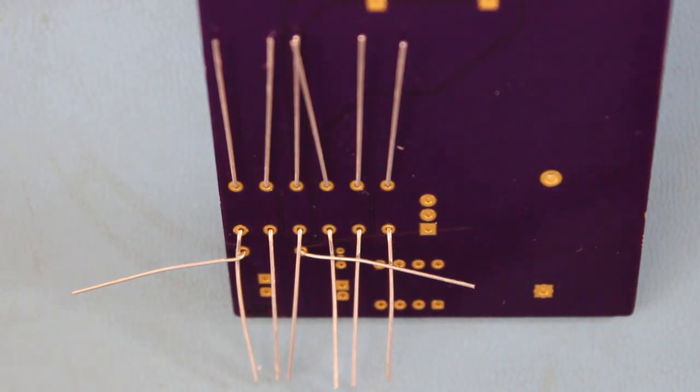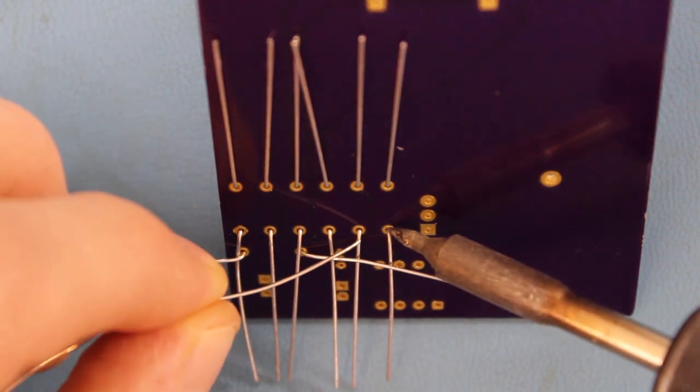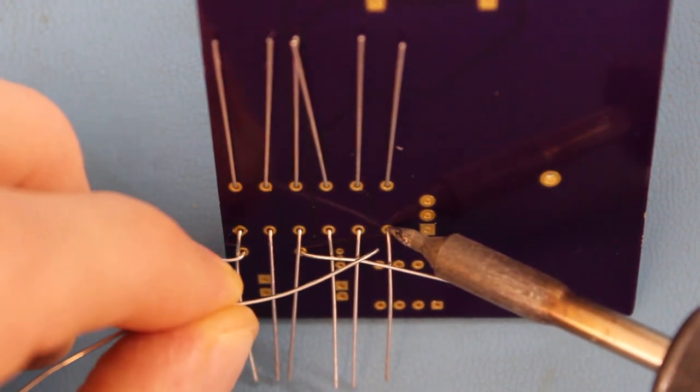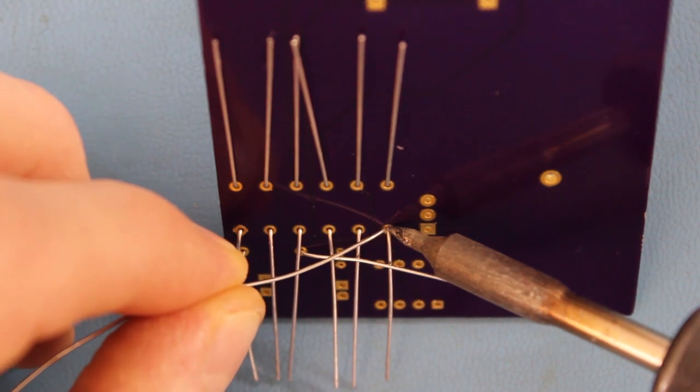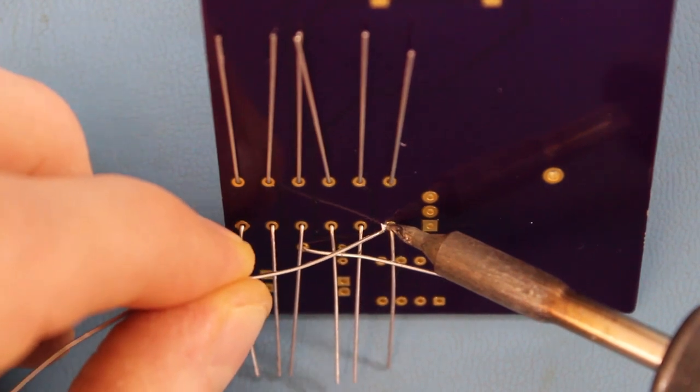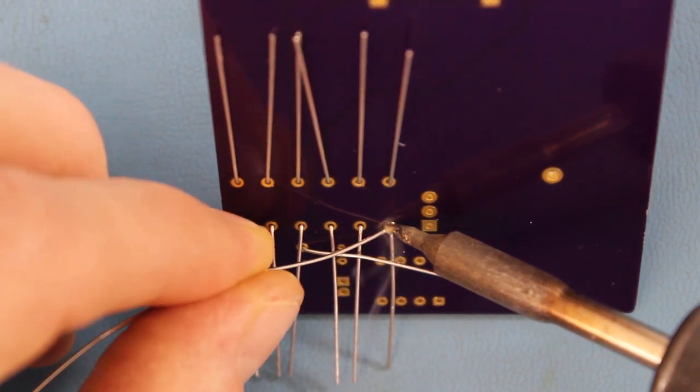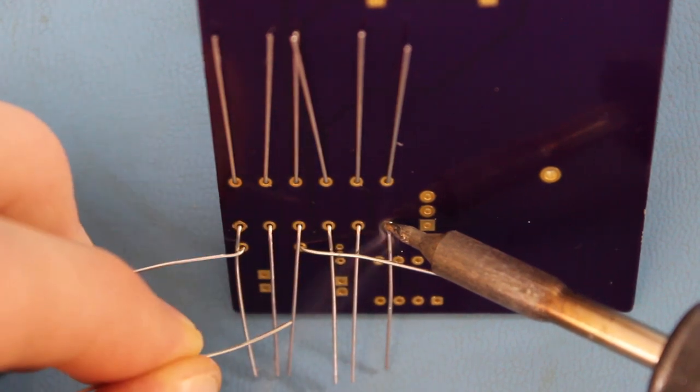Remember to hold the soldering iron so that the tip is touching both the component lead and annular ring. Wait a moment and then feed solder into that three-way junction. When you get a nice little mountain shape, remove the solder first and then remove the soldering iron.